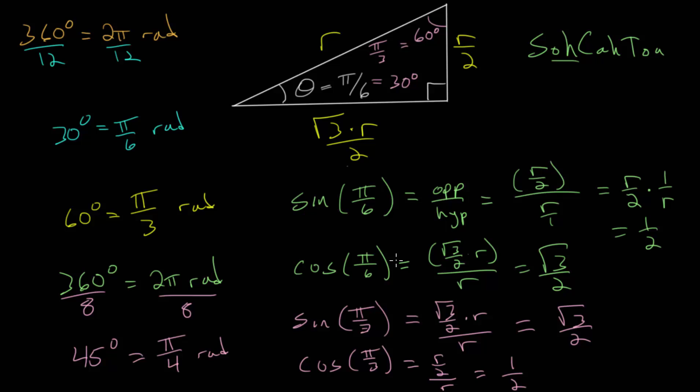And if we want, we can even look at the tangent function. Since the tangent of these angles, we'll do pi over 6 first, is the opposite over the adjacent. The opposite of the pi over 6 angle is R over 2. The adjacent is root 3 over 2 times R. The R's will cancel. And we have 1 half up top, and we multiply by this fraction flipped to over root 3, and we get 1 over root 3.